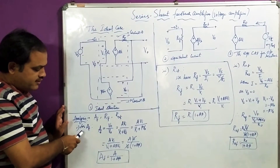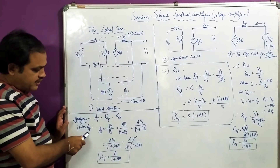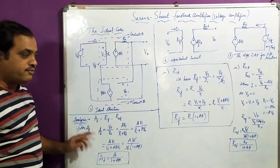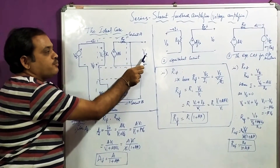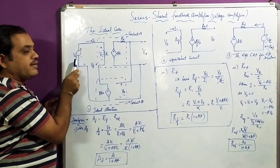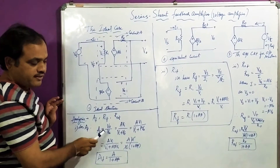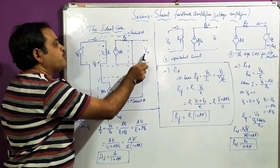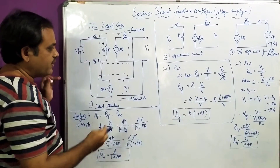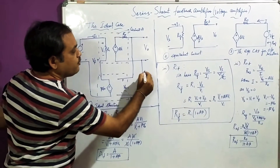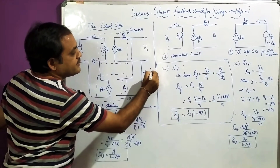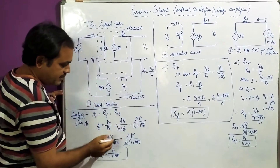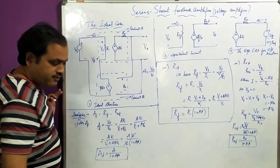Let us begin with the first one, that is closed-loop gain AF. AF is nothing but output divided by input, which is V0 divided by VS. Now observe: from the open-loop gain definition, A is V0/VI, so V0 is nothing but A times VI. Therefore AF equals A·VI divided by VS.